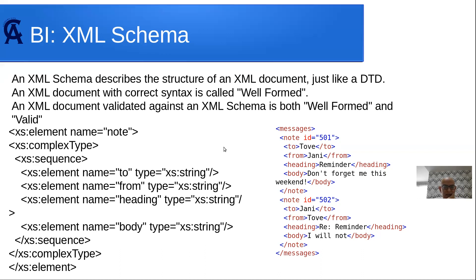If I added another element the schema didn't expect, it would complain. If I'm missing 'body', it would complain that the schema is not fulfilled. This short schema tells me I can have a 'note' element with that specific structure. The schema is usually defined inside the document itself. So far we've learned what XML is, about XML with attributes, about schemas — and that the schema is XML by itself, only defining what the XML should look like.